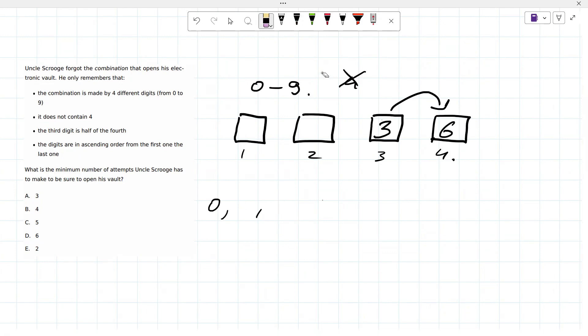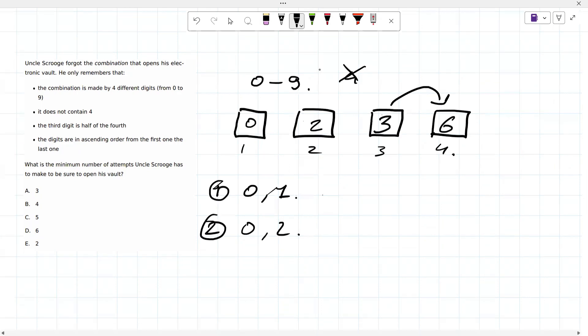Our first combination is, let's say, zero and one. So our first attempt to try to crack this PIN is zero, one, three, six. This is our first attempt, zero one. Okay, the second attempt, let's put instead of one, we'll put two. So the second attempt is zero, two, three, six. Zero, two, and so on.